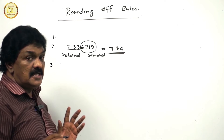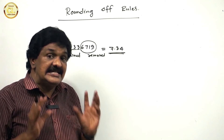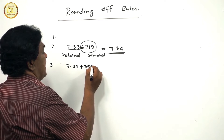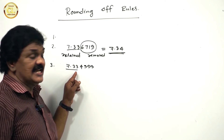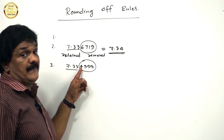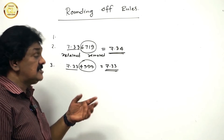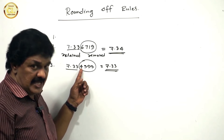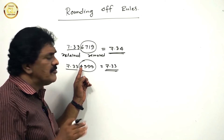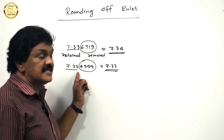Third rule: if the leftmost digit to be removed is less than 5, then the last digit to be retained is not changed. For example, 7.3349999 — we want to retain 7.33 and remove 49999. The leftmost digit to be removed is 4, which is less than 5, so no need to add anything. The answer remains 7.33.